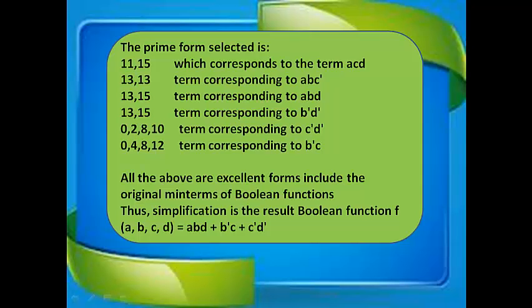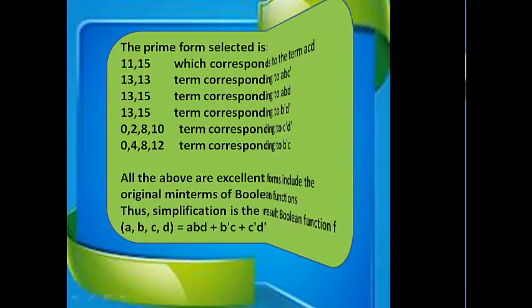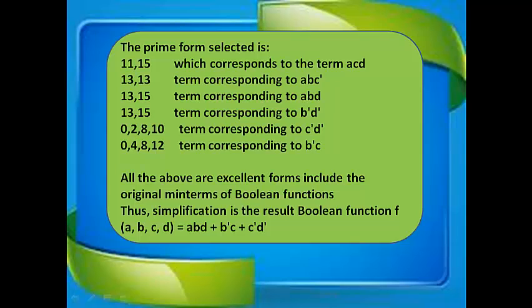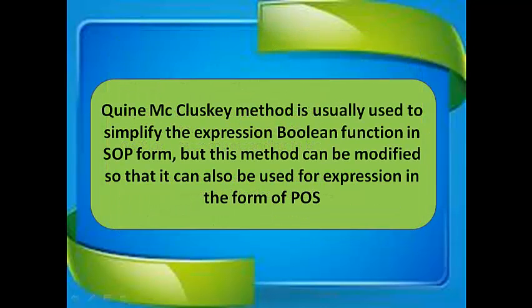Thus the simplification result is the Boolean function f(a, b, c, d) = a·b·d + b complement·c + c complement·d complement. The Quine-McCluskey method is usually used to simplify Boolean function expressions in SOP form, but this method can be modified so that it can also be used for expressions in the form of POS.